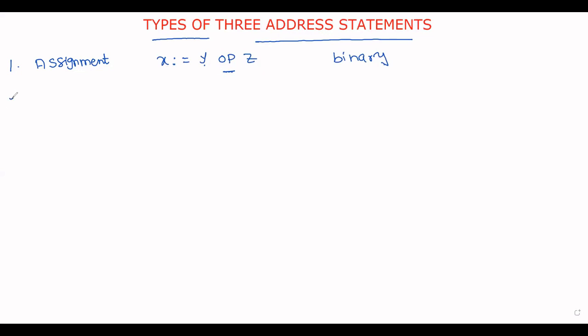We also have assignment statements in another form: x = op y. In this case, op is a unary operation — for example, unary minus, logical negation, shift operators, or conversion operations. The operation is performed on y and the result is assigned to variable x.